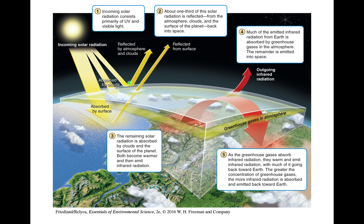The greenhouse effect comes from the fact that Earth gets its energy essentially from the sun, but a lot of that energy just bounces away — about a third is reflected back into space by clouds, the atmosphere, and the surface. This figure from our book shows a top-down view of this. The rest of the solar radiation is absorbed — by water, trees, us, everything.